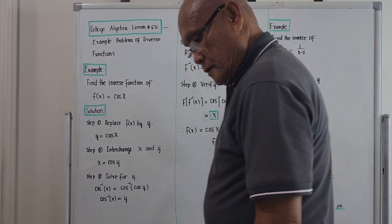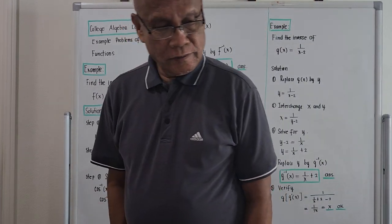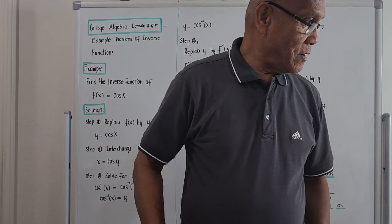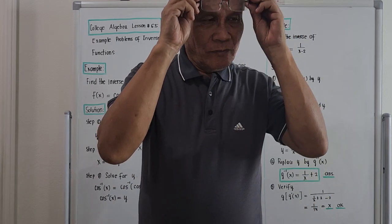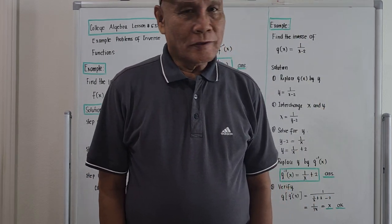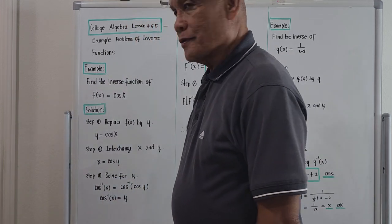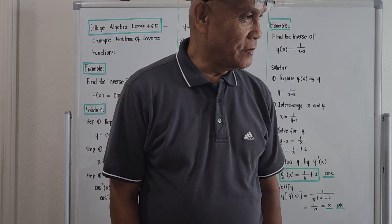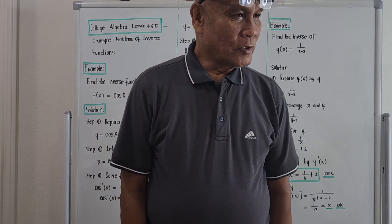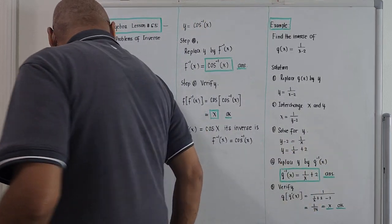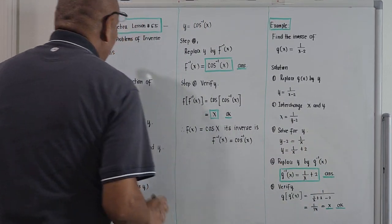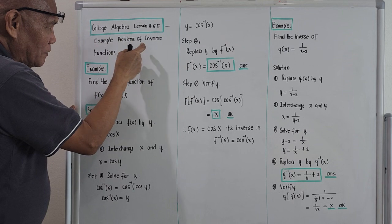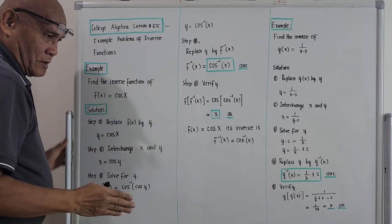Good morning, it's September 18, 2023, the time is 2:30 AM. My next topic on my session will be college algebra, and we are now on lesson number 65. We are running smooth on college algebra and we are almost done. The title of the topic is example problems of inverse functions.